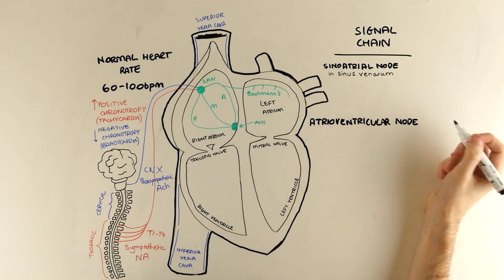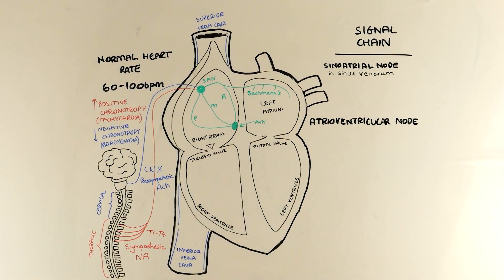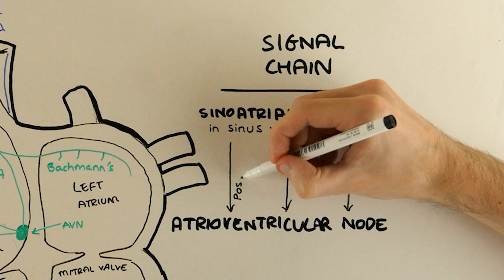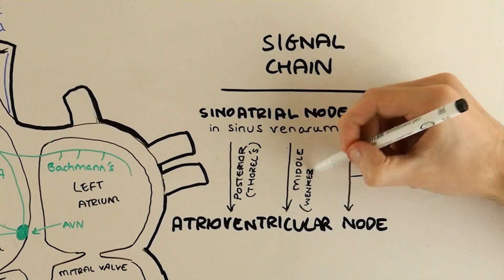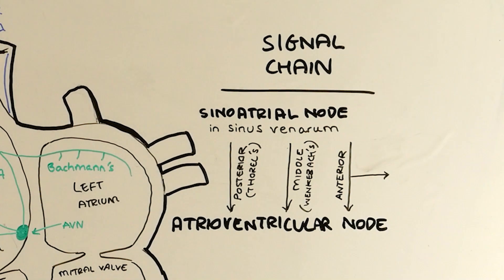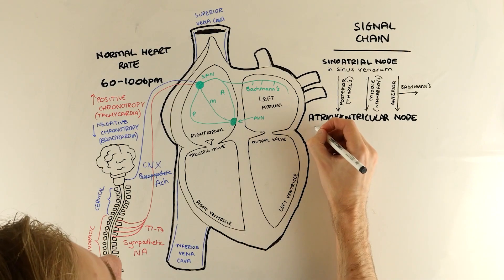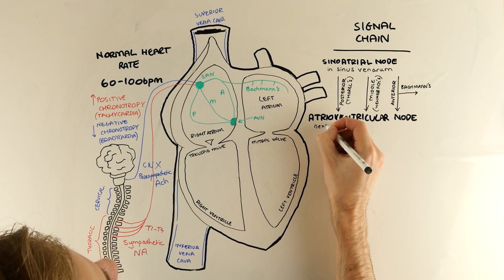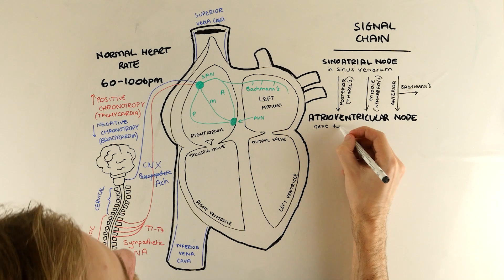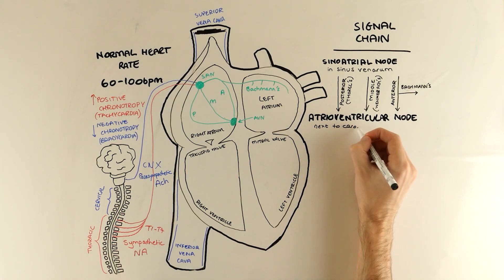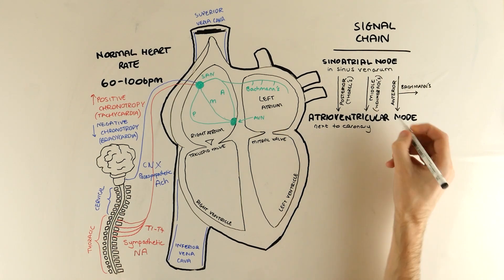There is a branch of the anterior tract which loops backwards to the left atrium which is how the right and left atria know when to contract together. Now we're at the atrioventricular node which sits near the interatrial septum right next to the coronary sinus. And this is the key step which electrically connects the atria and the ventricles.